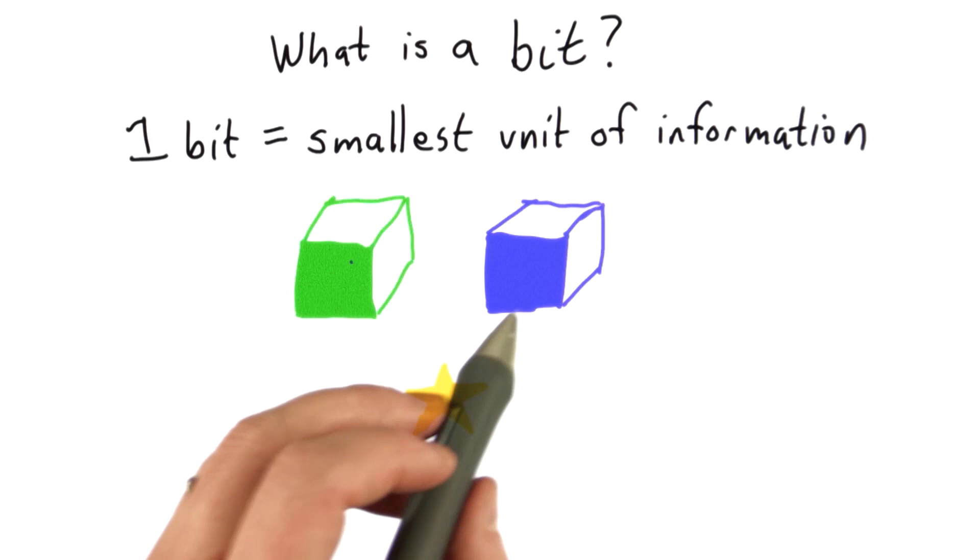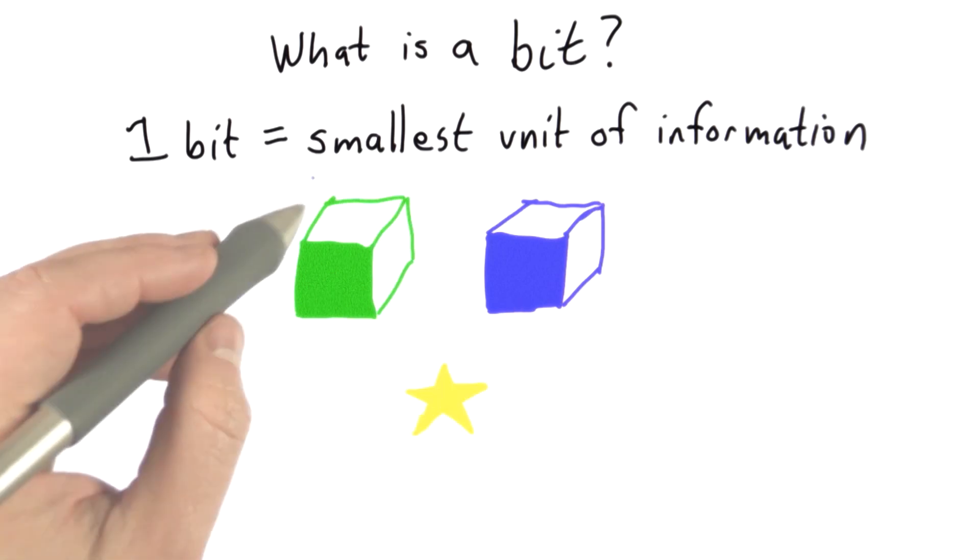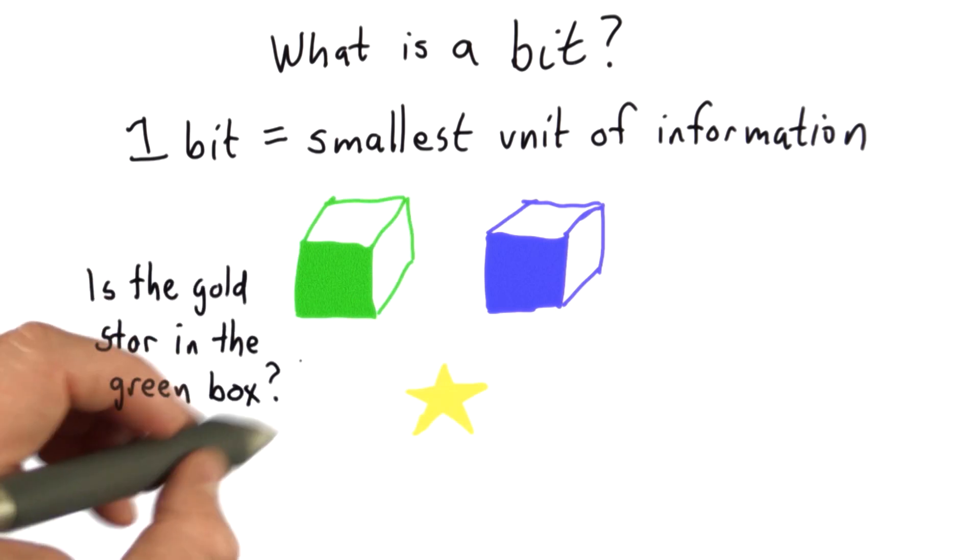And it's equally likely to be in either the green box or the blue box. One bit is the answer to one yes or no question. So if you ask one yes or no question, you ask, is the gold star in the green box? Then you get one bit back as the response. So you get an answer that's either yes or no.